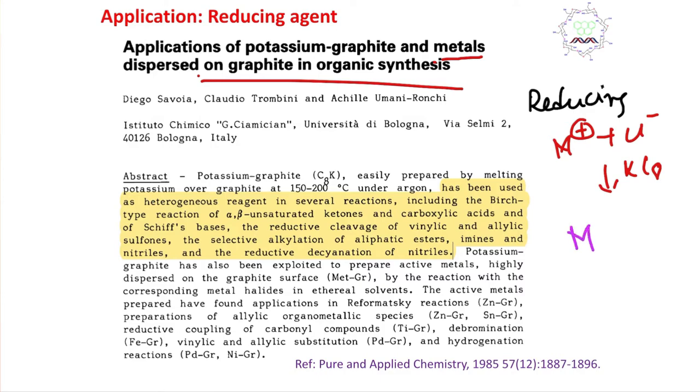This is the formation of metal. Let us read this carefully: potassium graphite is easily prepared by melting potassium over graphite, 150 to 200 degrees Centigrade under argon. Why?